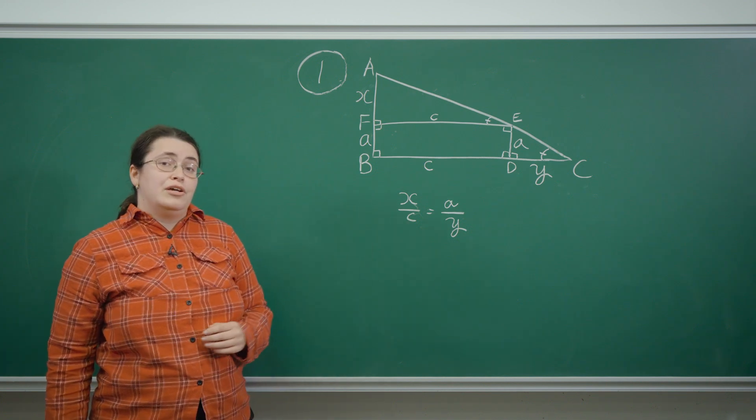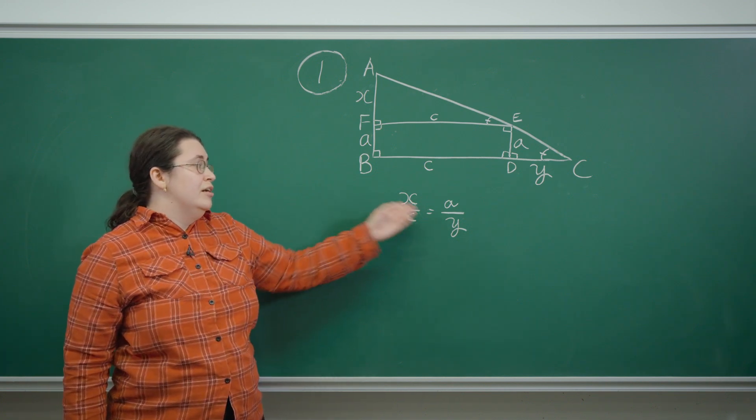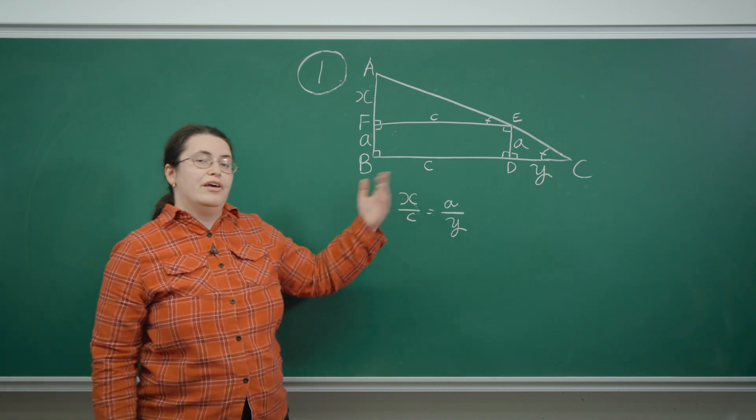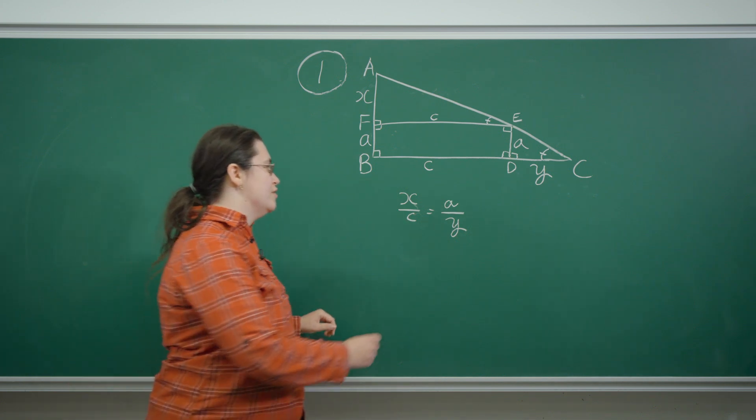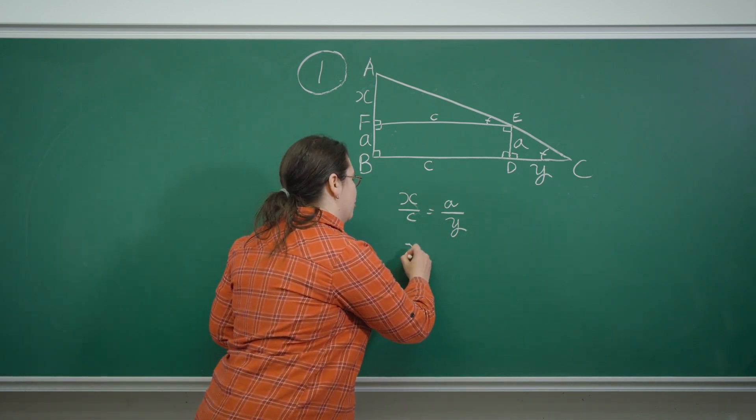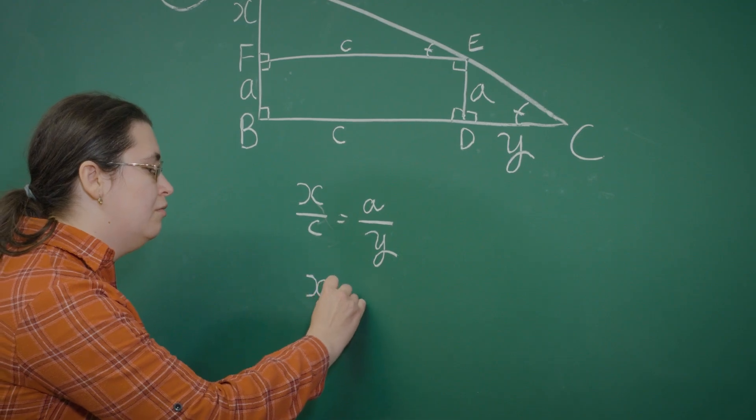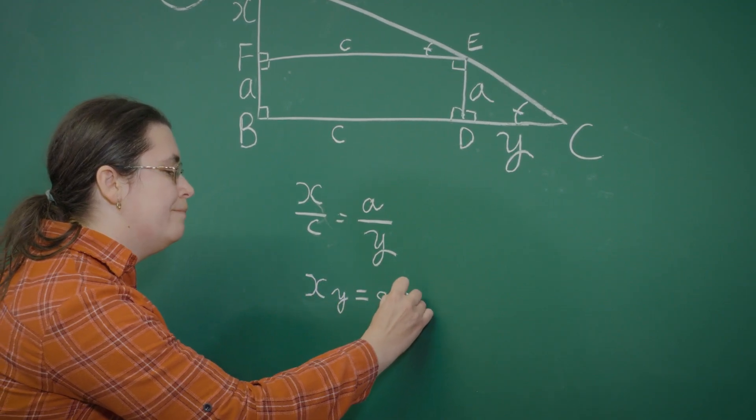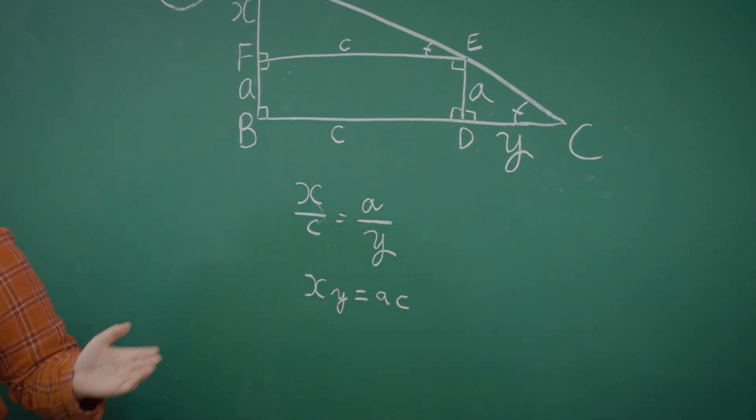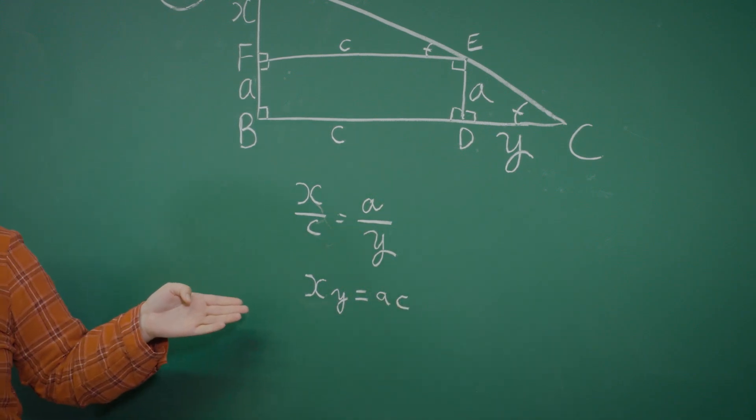Alternatively we can rewrite this in terms of product by multiplying through by Y and C. There's no problem here. These are side lengths and are therefore positive, not zero. And this will prove useful for both parts of the question.